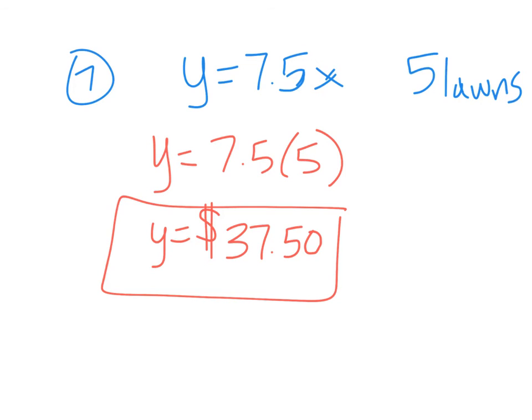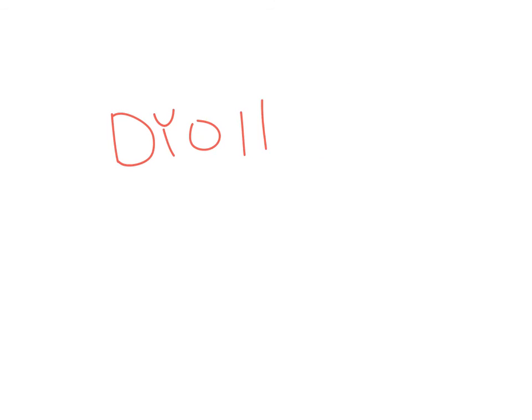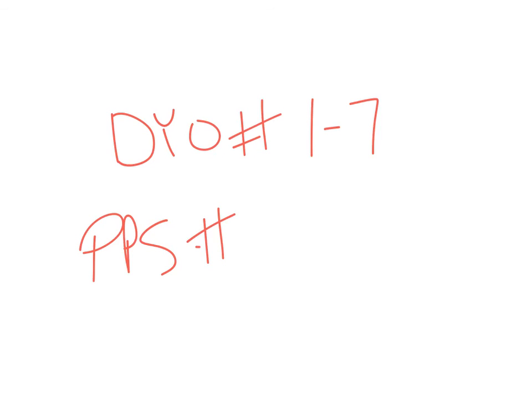Any questions on how to do this lesson? Good. Turn in the on-your-own since you're all going to study for history. This was on-your-own numbers 1 through 7. For homework, you're going to do the practice and problem solving, numbers 4 through 29.